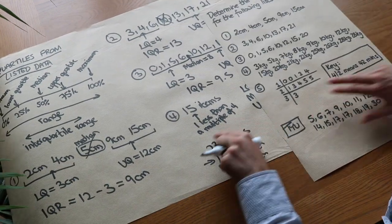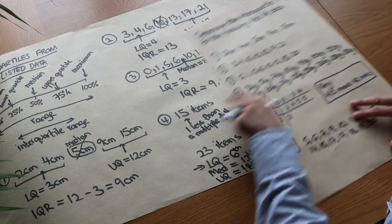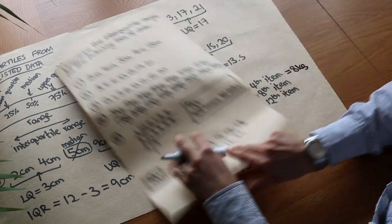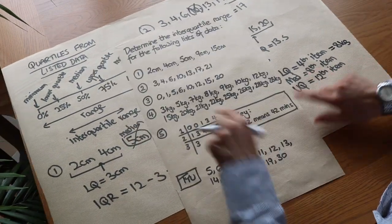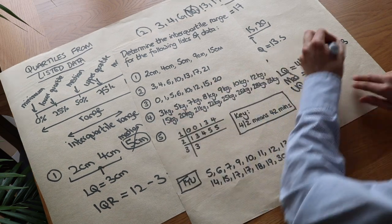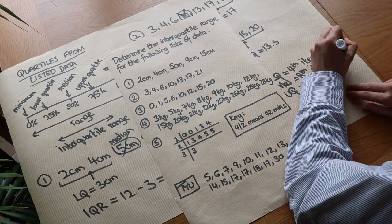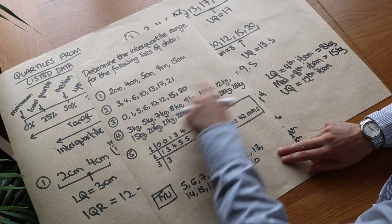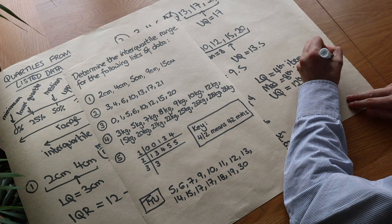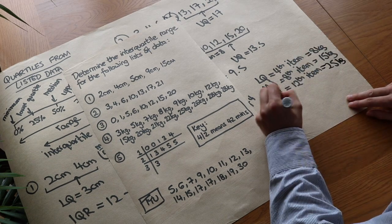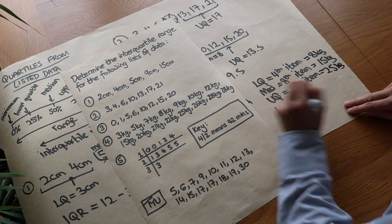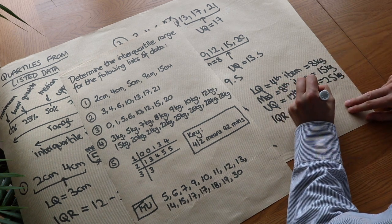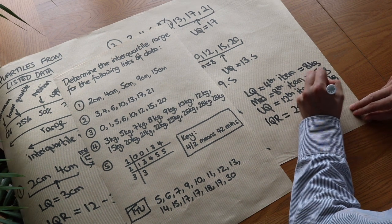Let's finish off this question. We want the 4th item, which is 8 kilograms — that's the lower quartile. The median is the 8th item, which is 15 kilograms. And the upper quartile is the 12th item, which is 25 kilograms. The interquartile range is equal to the upper quartile minus the lower quartile: 25 minus 8, which is 17 kilograms. Make sure you don't forget the unit for your range or your interquartile range.